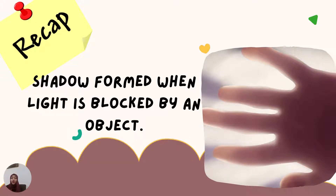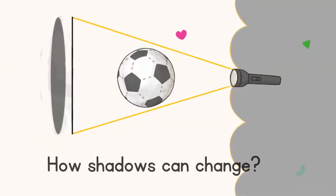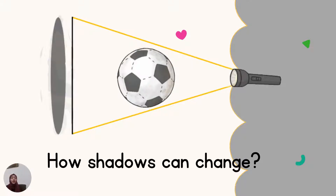We learned that a shadow is formed when light is blocked by an object. So to form a shadow, we need light and an object to block that light. But in today's class, we are going to learn how these shadows can change.